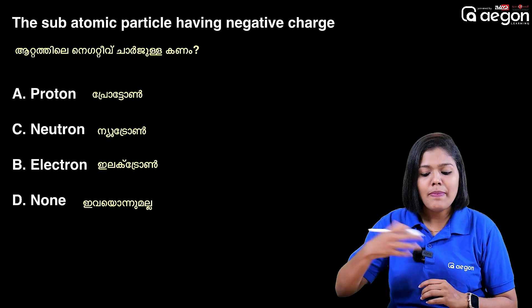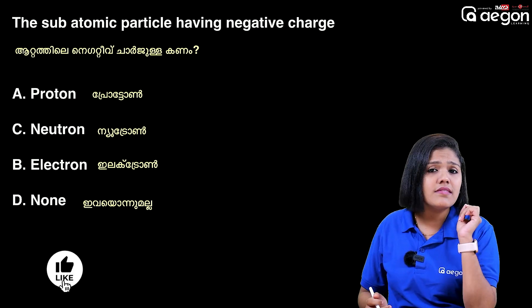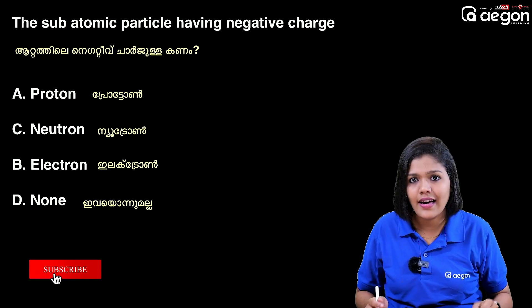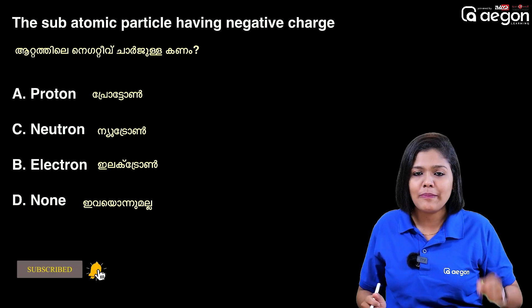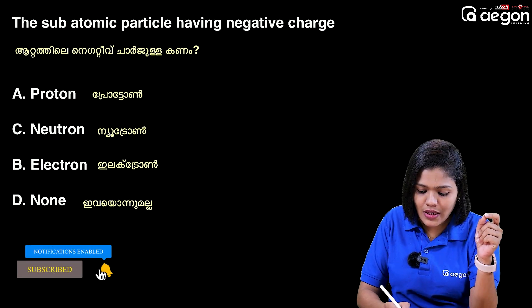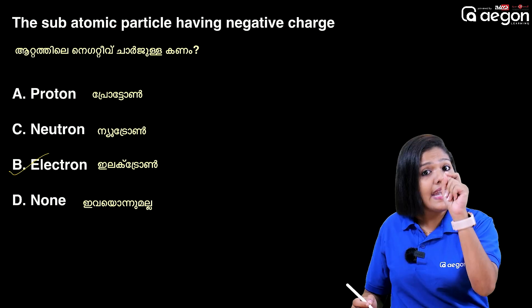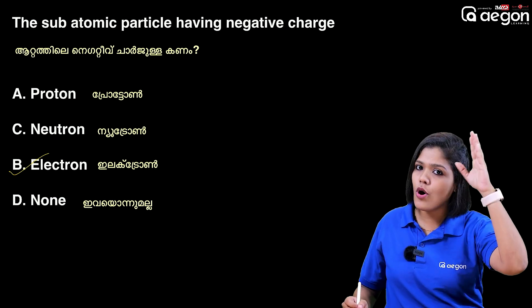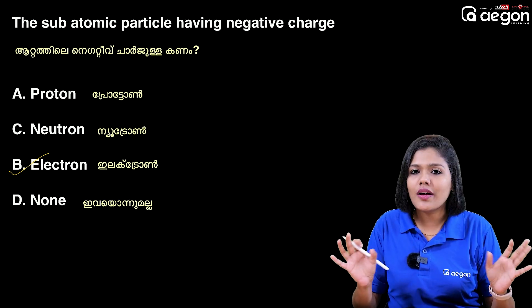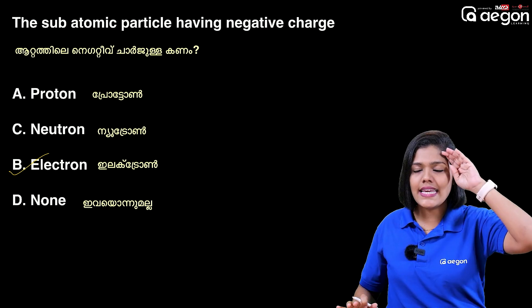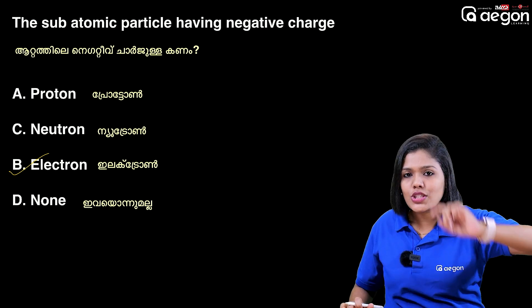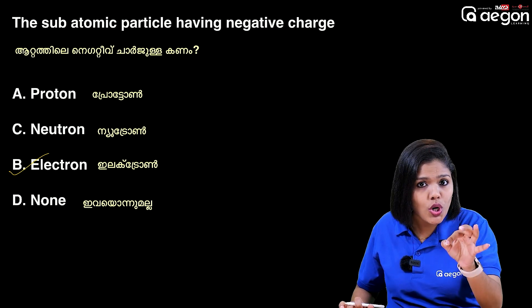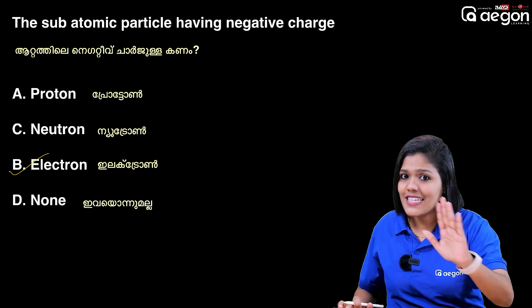The subatomic particle having negative charge — that means electron, because of the negative charge. The proton has positive charge. Neutron has no charge. Electron: negative charge. Proton: positive charge. Neutron: without charge.